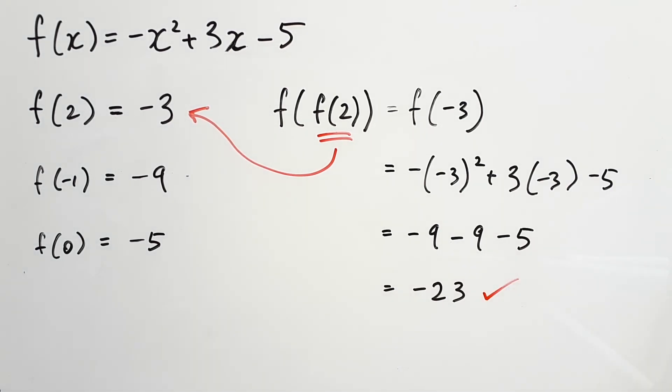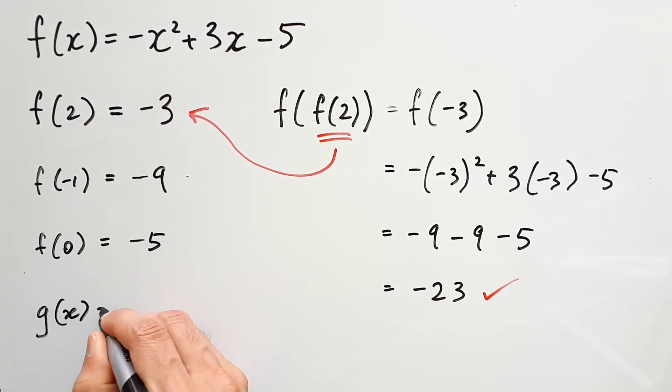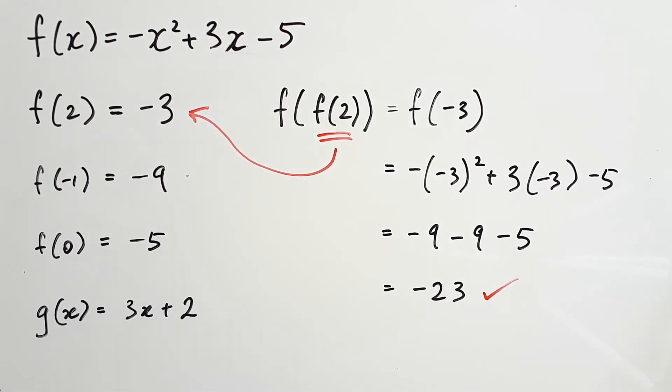So we can see that throughout this entire video, f of x was a pretty handy notation to do some quick calculations. This becomes especially useful when you have another function like g of x equal to 3x plus 2, and you want to do operations like f of 2 plus g of 1. This way you know exactly which rule is where.